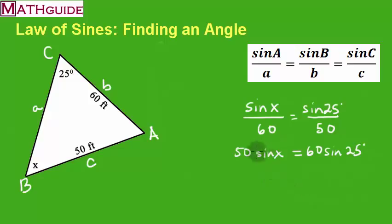Alright, just like I would solve any proportion or any two fractions that are equal, I'm going to cross multiply. So I'm going to multiply 50 times the sine of X. I'm going to multiply 60 times the sine of 25. Alright, so I get that picture. Alright, next, what I want to do is solve for the sine of X.